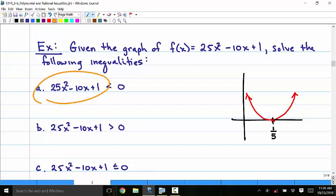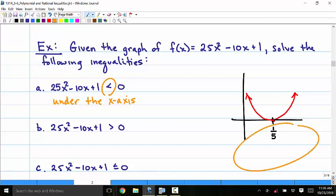You want your polynomial to be less than 0. When you're looking at a graph, less than 0 corresponds to under the x-axis. Do you see any of the red underneath the x-axis down here? No.